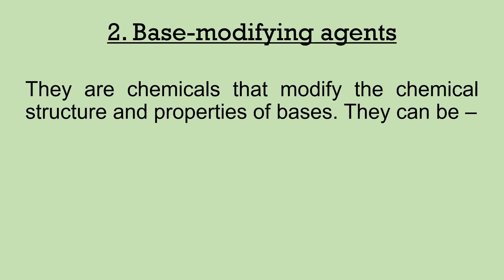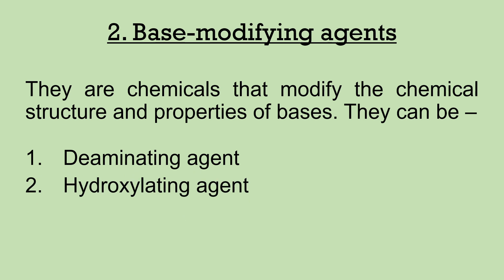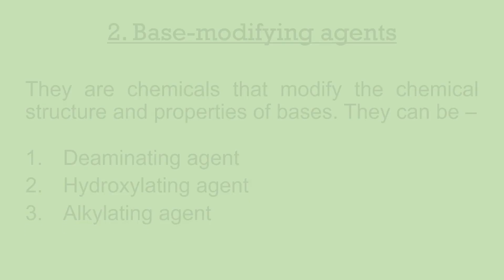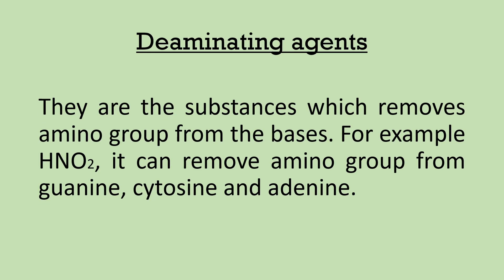Base modifying agents are chemicals that modify the chemical structure and properties of bases. They can be deaminating agents, hydroxylating agents, and alkylating agents. Deaminating agents are substances which remove an amino group from the bases — for example, HNO₂ (nitrous acid), which can remove the amino group from guanine, cytosine, and adenine.